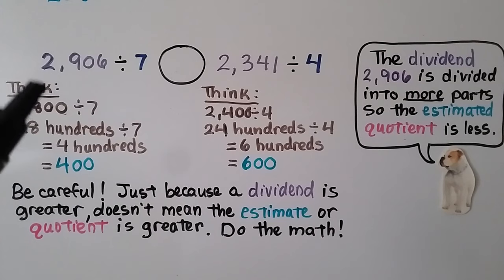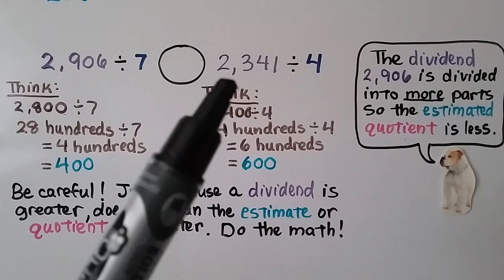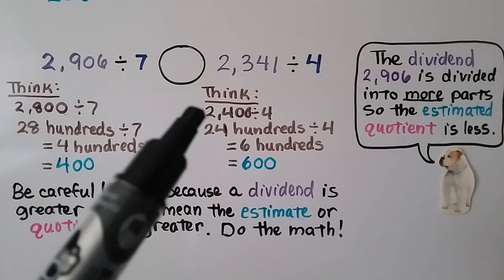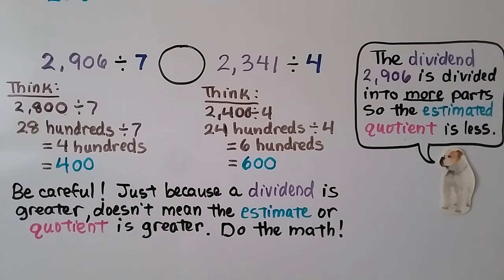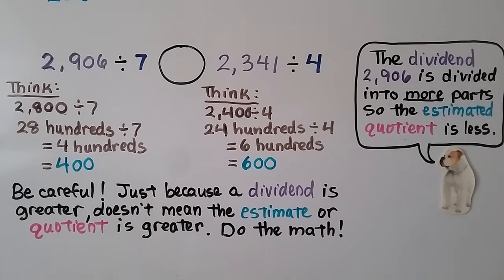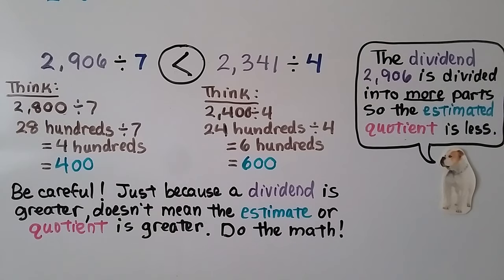Now we need to compare 2,906 divided by 7 to 2,341 divided by 4. Thinking of compatible numbers: 28 divided by 7 equals 4, so 2,800 divided by 7 equals 400. And 2,400 divided by 4 equals 600. So 600 is the greater quotient, meaning 2,906 divided by 7 is less than 2,341 divided by 4.